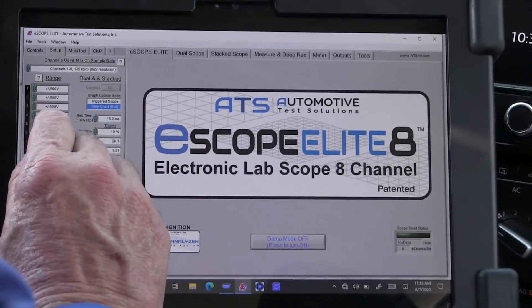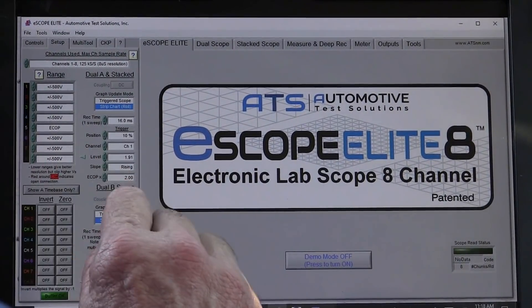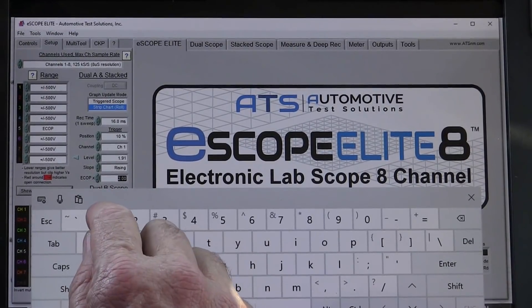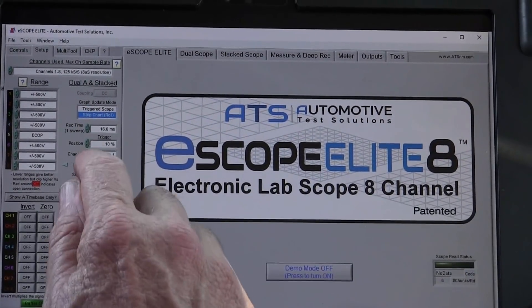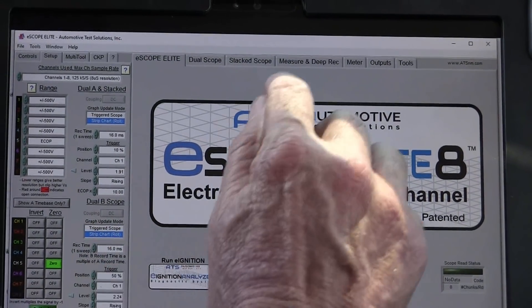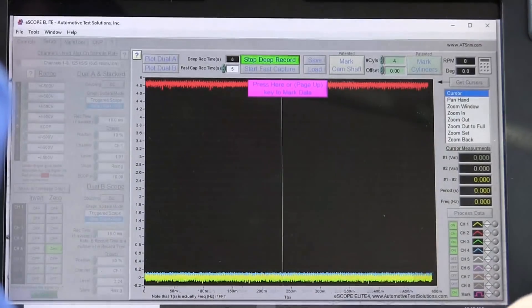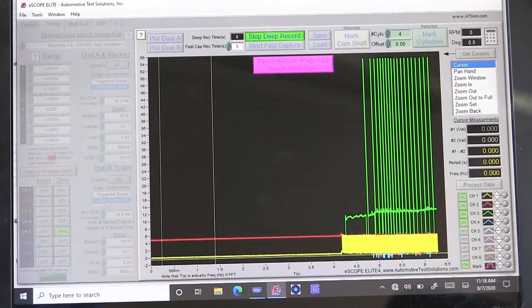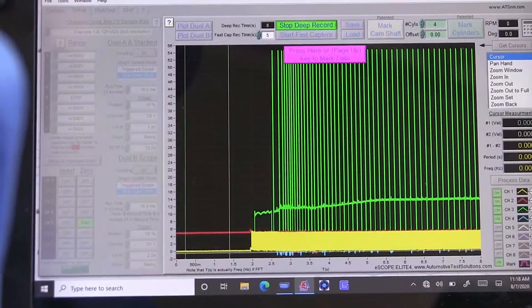The only thing I need to change is channel 5. I want to put an ECOP on 5 and I want to put a bigger multiplier. Let's go ahead and put a 10 times. That means it's going to be 10 times bigger so I can see that signal. We need to zero that and then we need to come over to deep record. We want to go ahead and start getting the data and we want to go ahead and start this thing up.